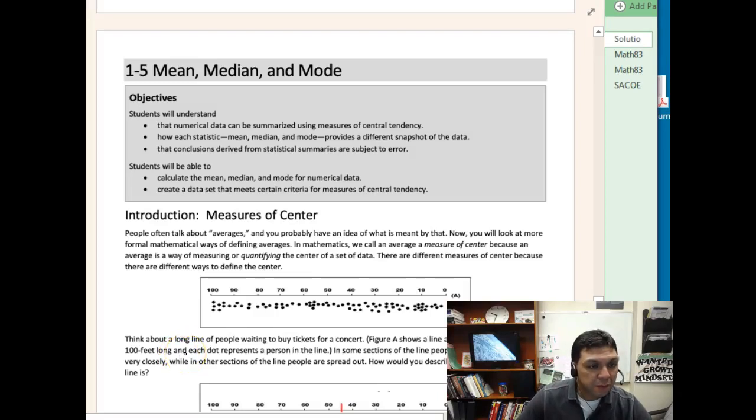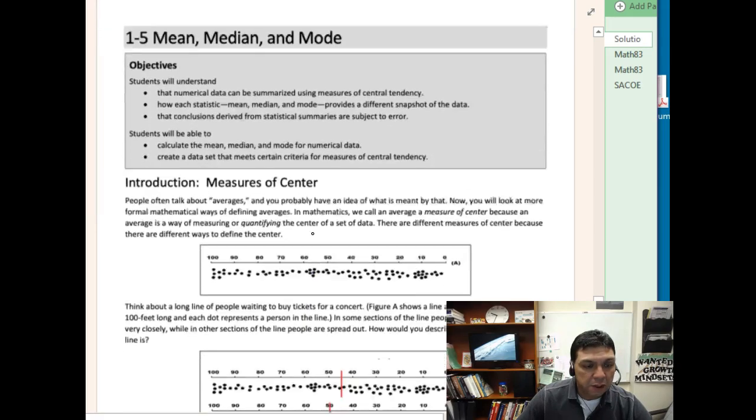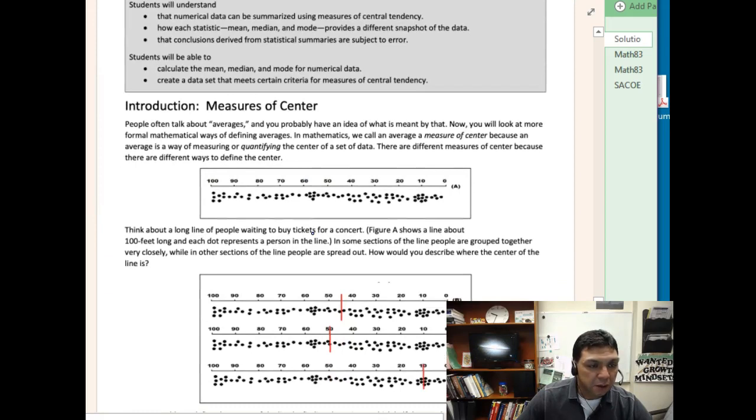We're going to go over Lesson 1-5 from the lesson book: Mean, Median, and Mode. We'll talk about these numbers that are called measures of center. In the lesson book, if you look at it, there's an introduction about how we talk about this word average.